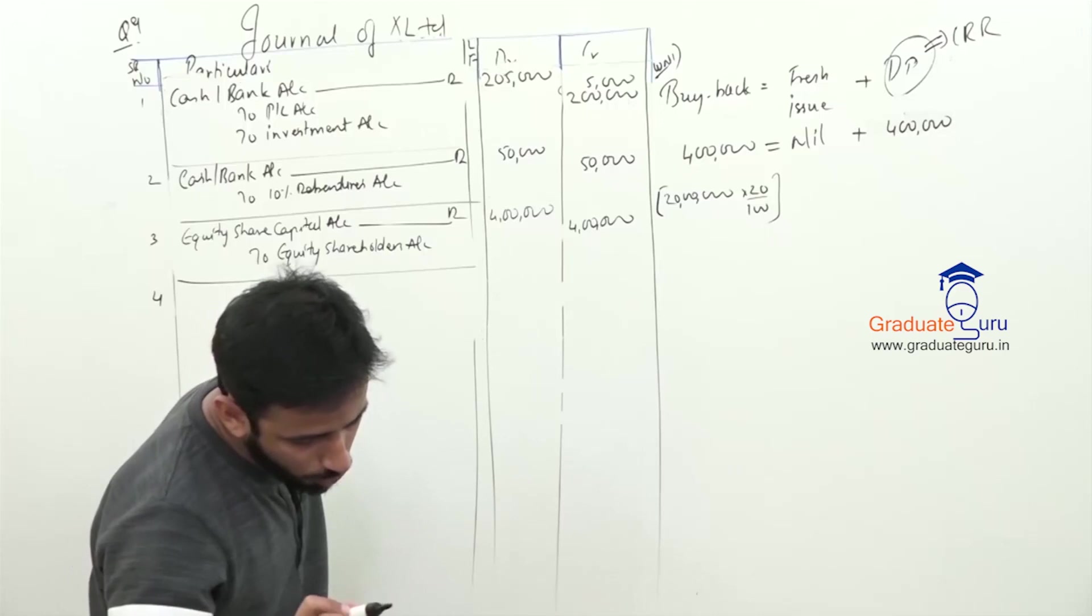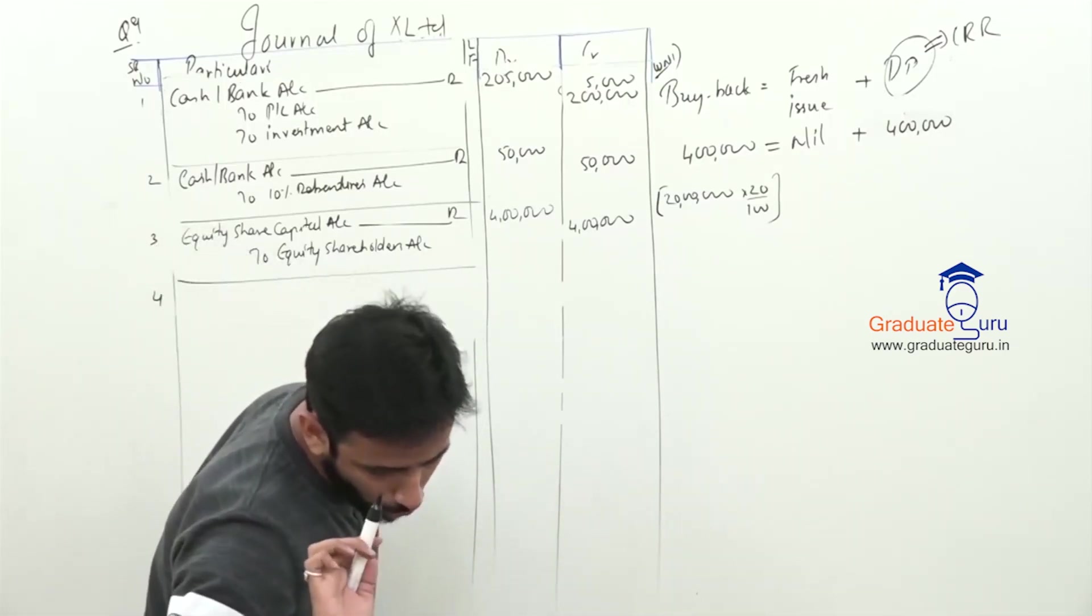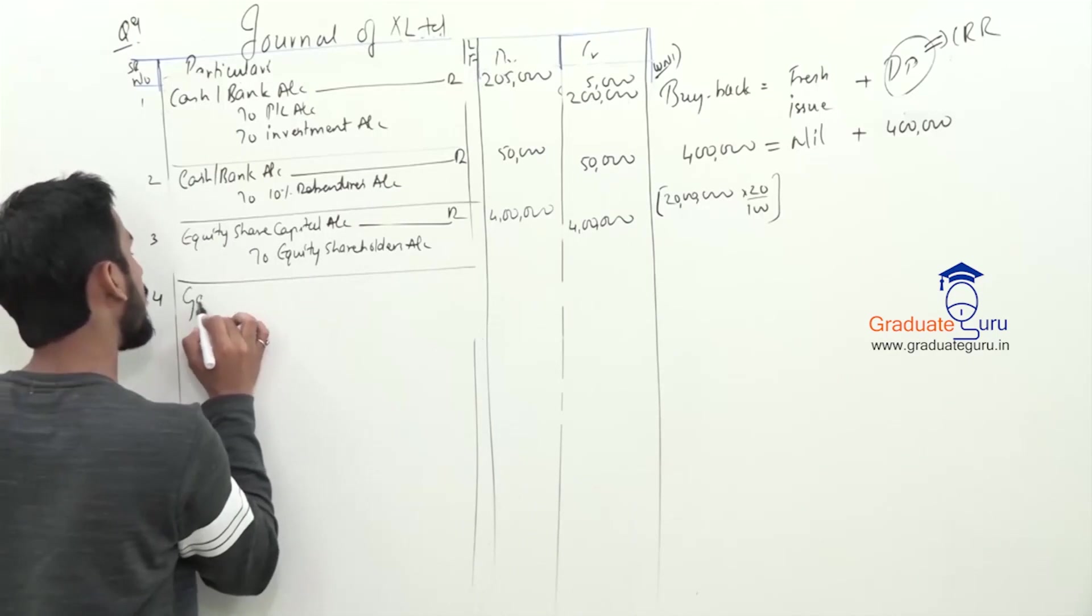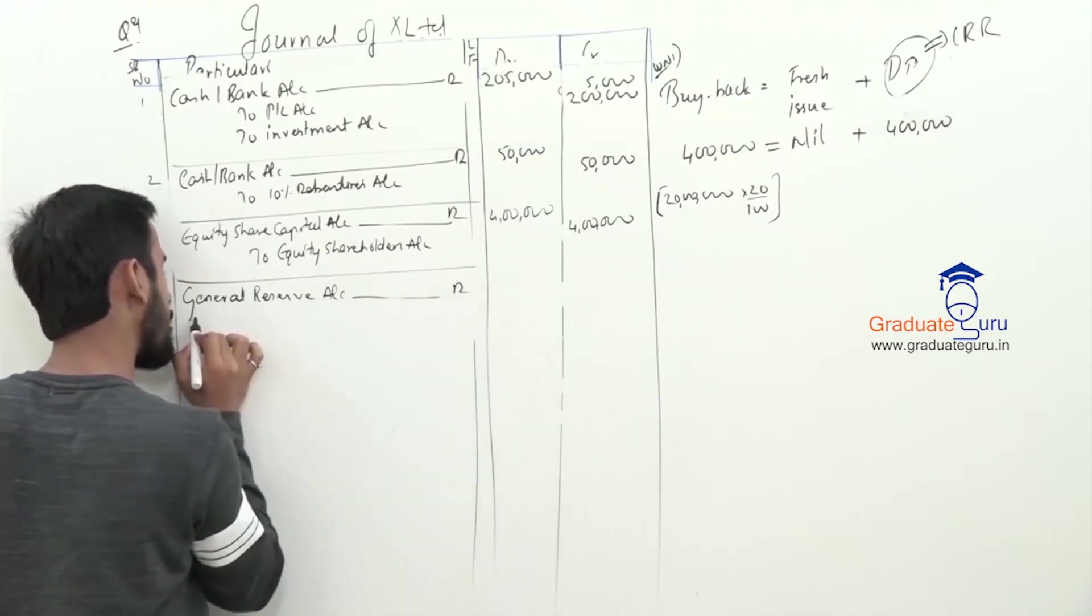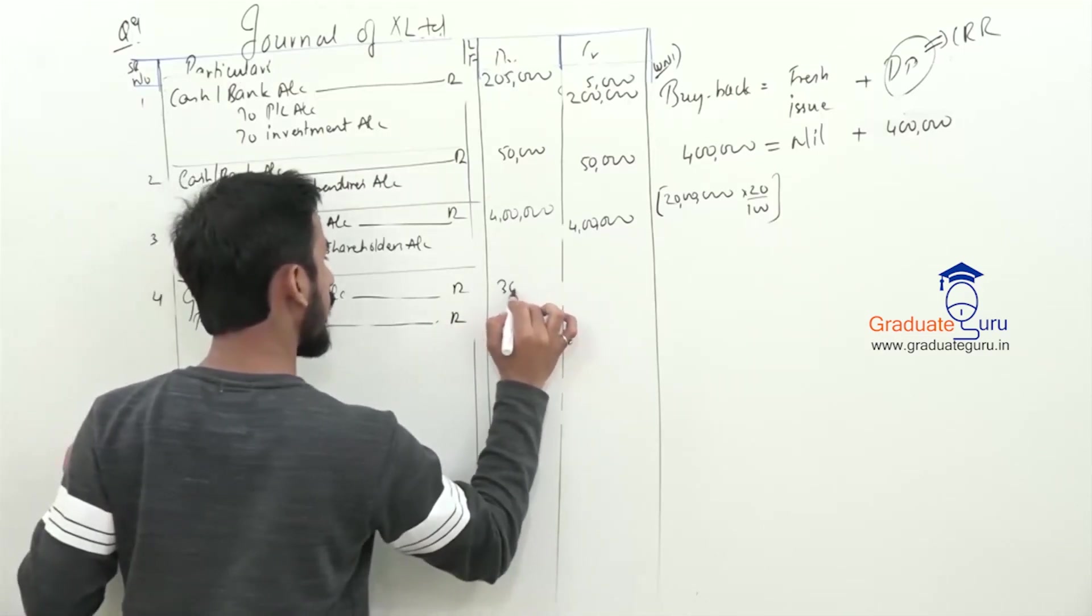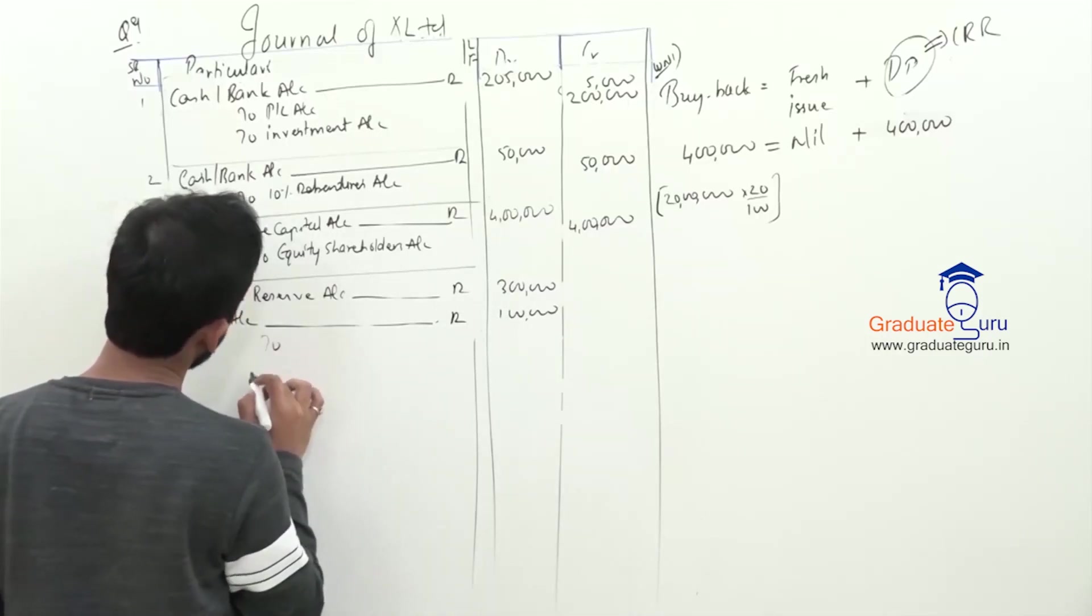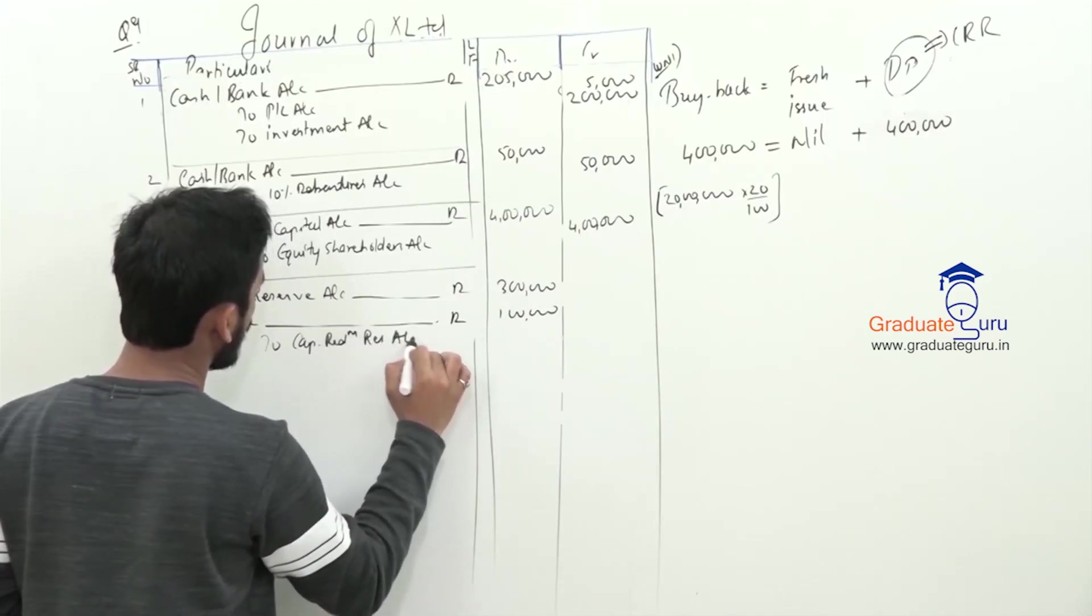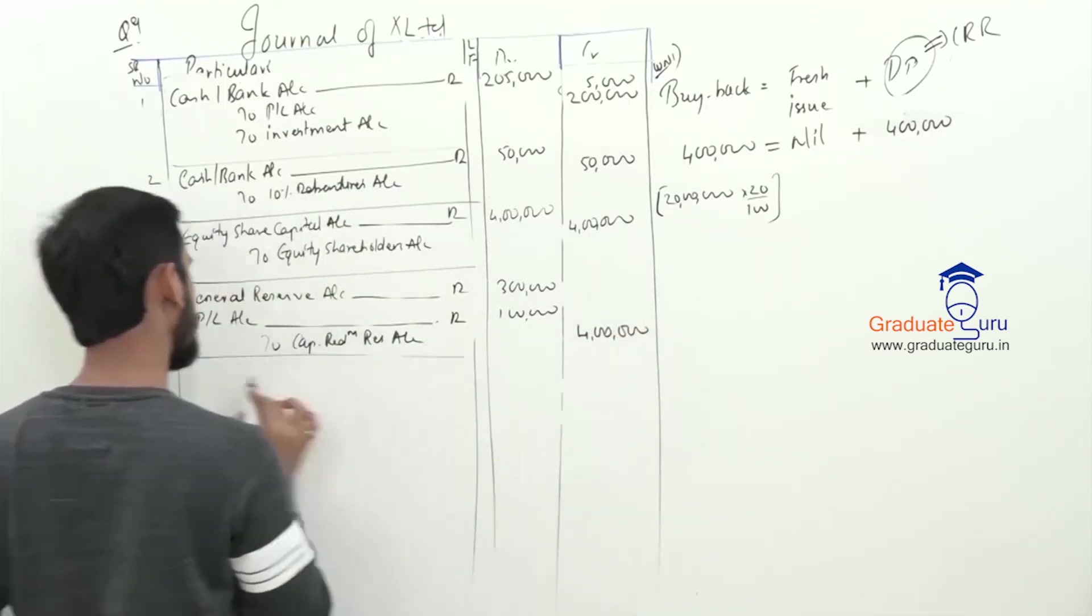PNL में पढ़ा है 3,00,000. So, we can use that entire amount. We have general reserve also. So, we will use general reserve completely and then go to the PNL account. General reserve account debit, PNL account debit. General reserve में पढ़ा है 90,000. So, here we will transfer 4,00,000 to capital redemption reserve.